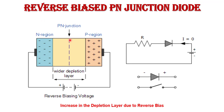In reverse bias PN junction, the P-type is connected to the negative terminal of the battery and the N side is connected to the positive terminal. With this polarity, the device is in reverse bias. The width of the depletion region increases because P-type positive charge carriers move away from the junction and N-type electrons also move away from the junction. So the depletion region gets wider and no current flows across the junction — current I equals zero. The diode behaves like an open switch.